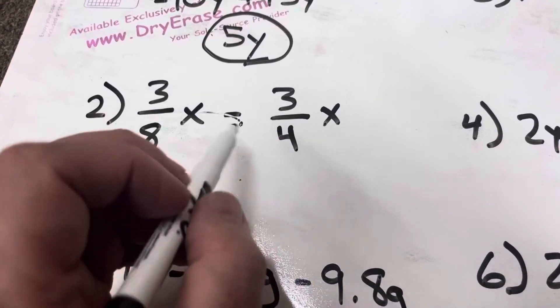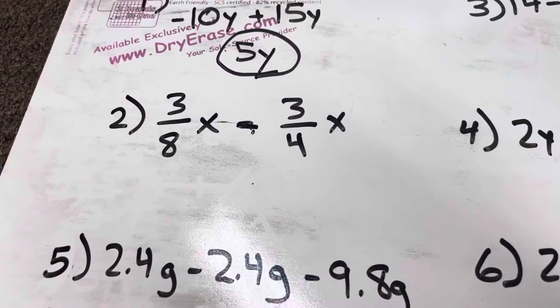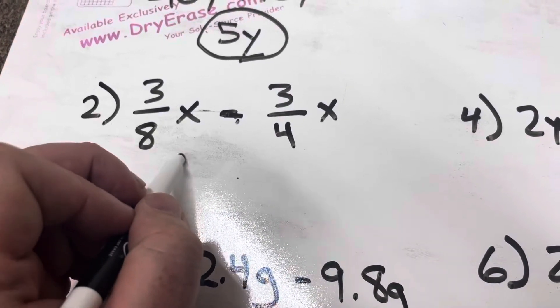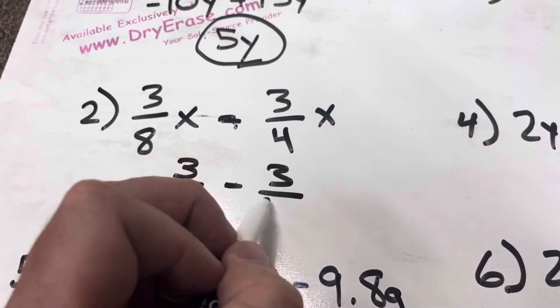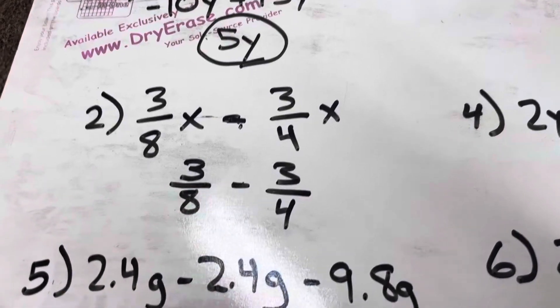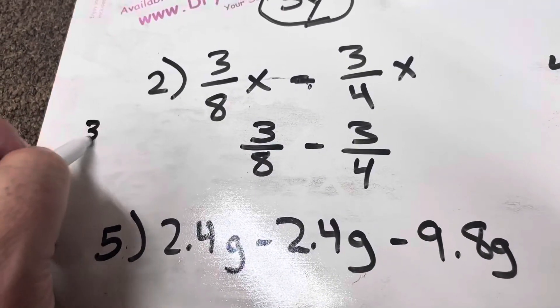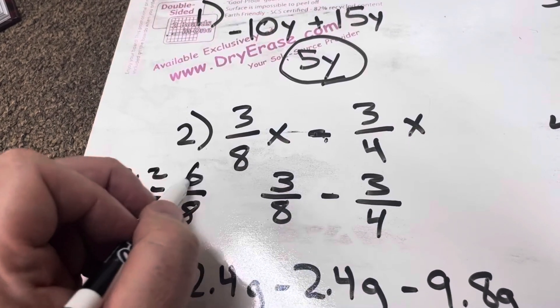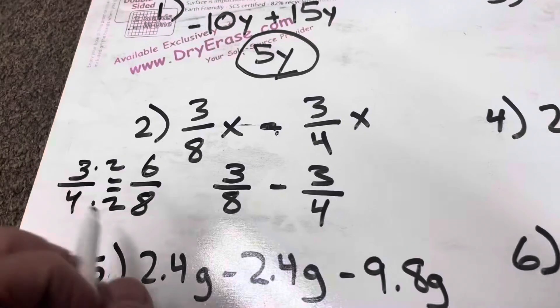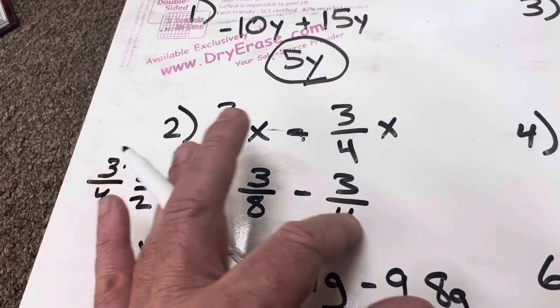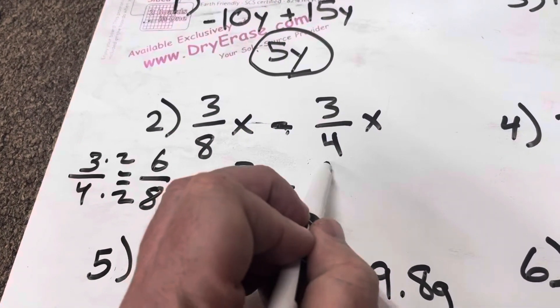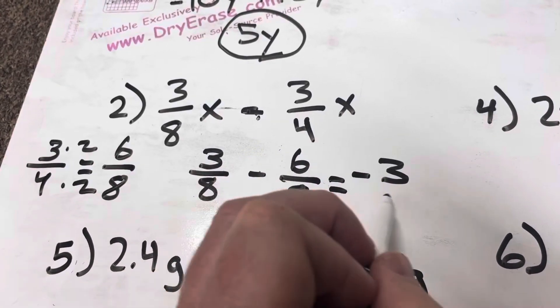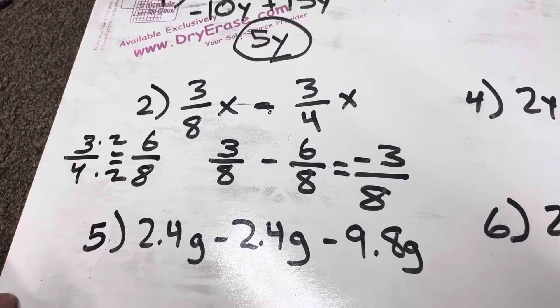Number two, 3 eighths x minus 3 fourths x. Well, these are like terms because they have x as a variable. Neither one of them have an exponent. So really, all I'm worried about doing here is 3 eighths minus 3 fourths. I want a common denominator. With 8 and 4, I'm going to say 8. So I want to figure out what 3 fourths is over 8. 4 times 2 is 8. So I'm going to do 3 times 2 and get 6. So I'm going to make this 3 eighths minus 6 eighths. 3 eighths minus 6 eighths is negative 3. So I end up with negative 3 over 8.